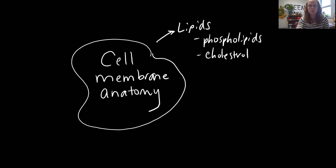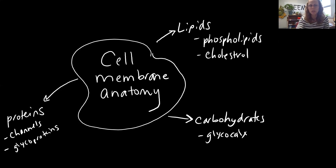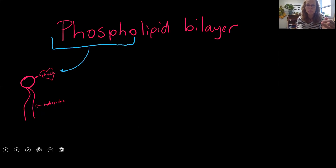Cholesterol molecules add stability to the membrane. Carbohydrates in the cell membrane anatomy appear most importantly as part of the glycocalyx structure, which has many different functions. Proteins have lots of important roles, including forming our protein channels. We'll also see proteins as part of the glycocalyx, and proteins acting as name tag markers on the cells — that is the job of the glycoprotein molecule. The cell membrane can also be described as a plasma membrane, plasma lemma, or a phospholipid bilayer.